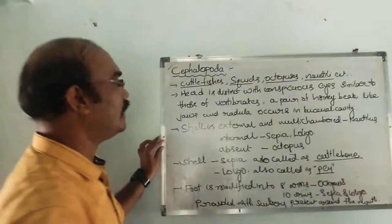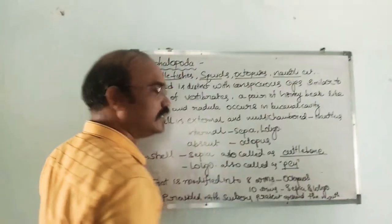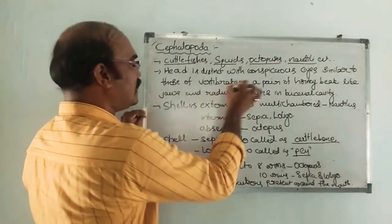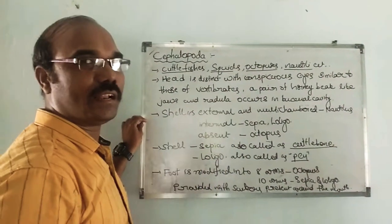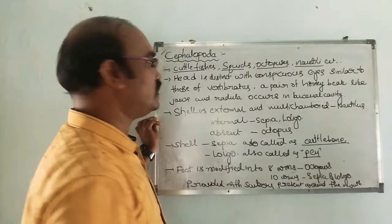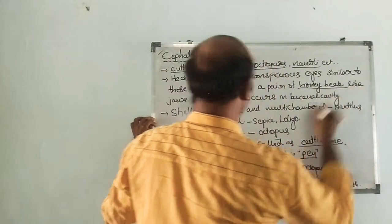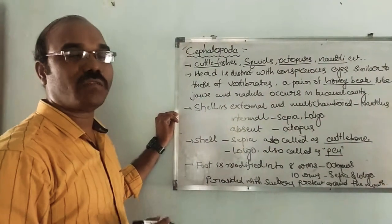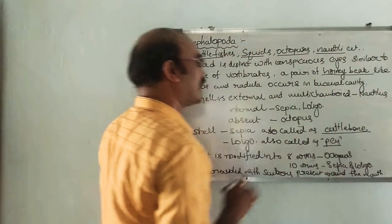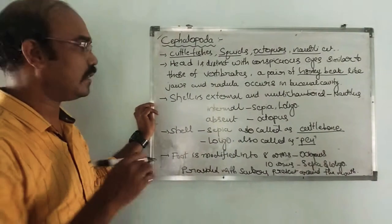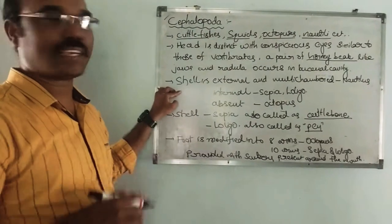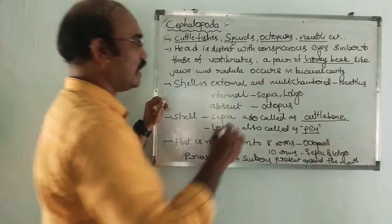The head is distinct with conspicuous eyes similar to those of the vertebrates. They have a pair of jaws forming a beak-like structure. Coming to the shell — the shell is external and multi-chambered.